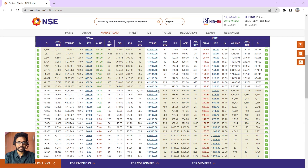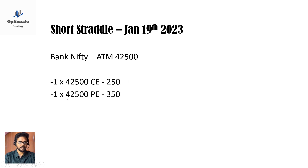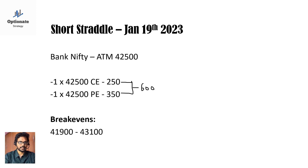We take 600 as our combined premium. Bank Nifty at-the-money strike price is 42500. We are selling one lot of 42500 call at 250 rupees and one lot of 42500 put at 350 rupees, with a combined premium of 600 rupees. Our break-even on the lower side is 41900 and on the upper side is 43100.